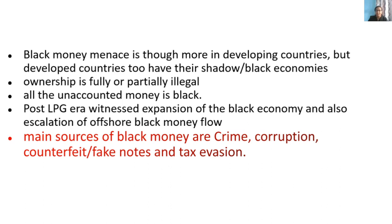After the LPG reforms, tax rates were brought down to around 30%, but by then strong networks had already been developed. People were aware of the government's historical failure to bring evaders to book. The post-LPG era witnessed an expansion of black money and escalation of offshore money flows, mainly due to globalization, which reduced costs and regulations over transfer of funds abroad. Increasing flow of transnational investment, multinational companies, and robust stock markets attracted FIIs, resulting in increasing round-tripping. The main sources of black money are crime, corruption, counterfeit or fake notes, and tax evasion.